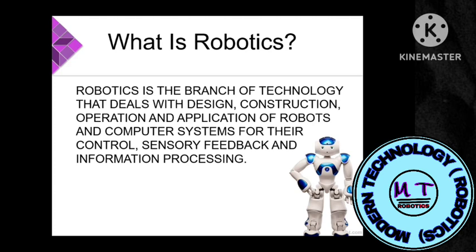A robot also has some controls, sensors, and information processing — just like a human being. We have sensors from which we take input, a brain which processes that input and gives some output. A robot works the same way.